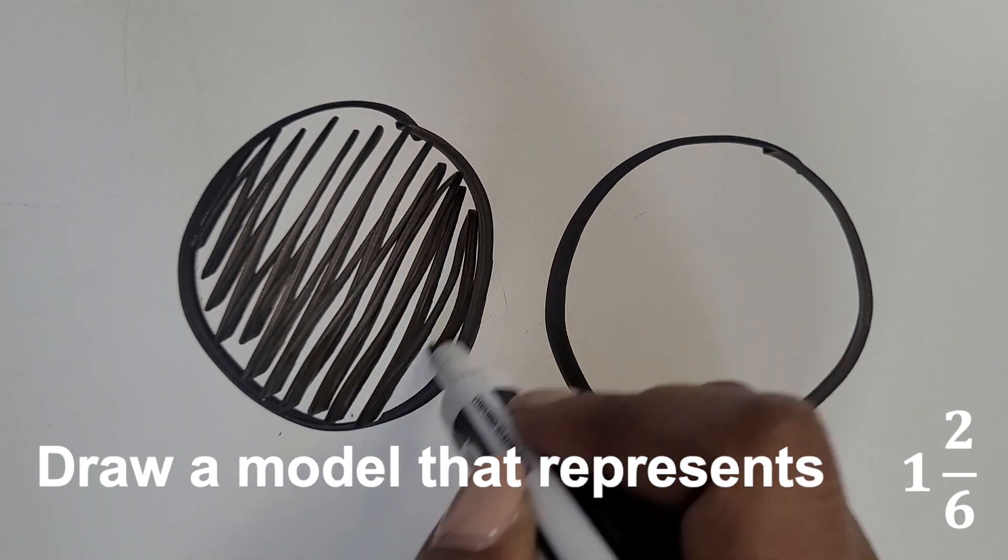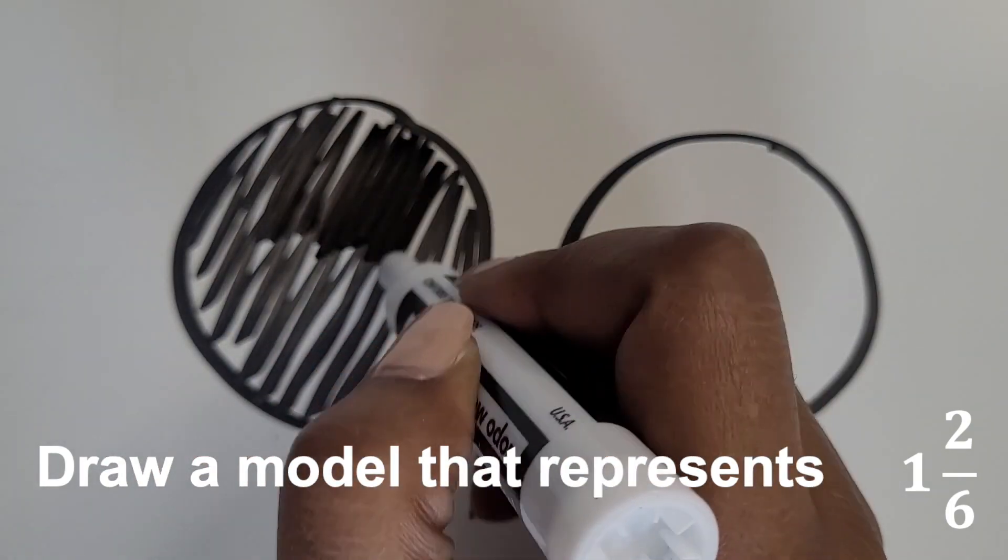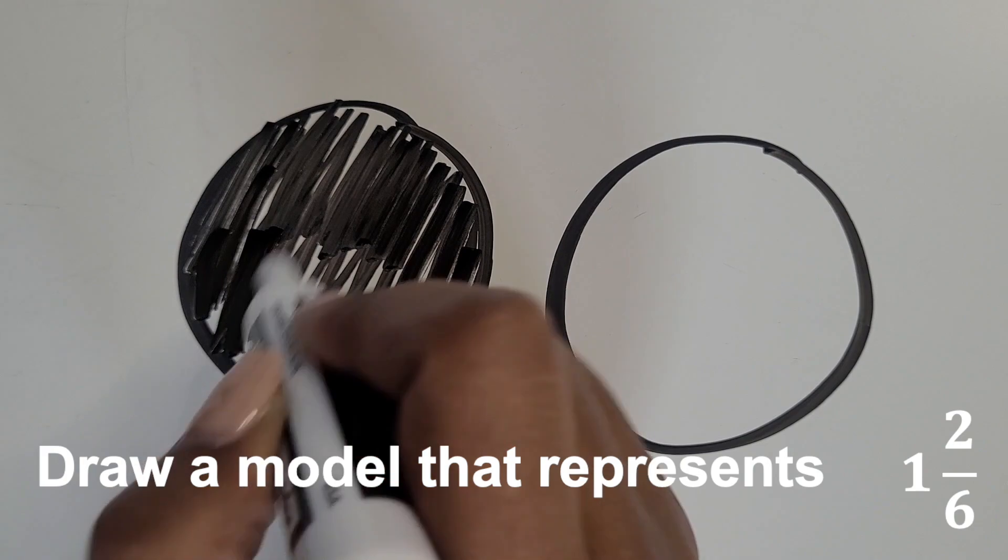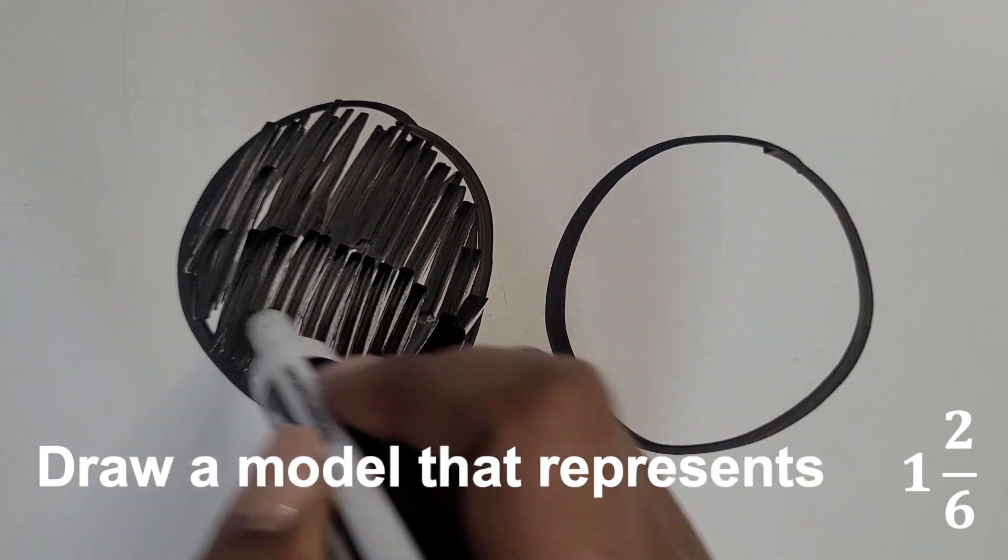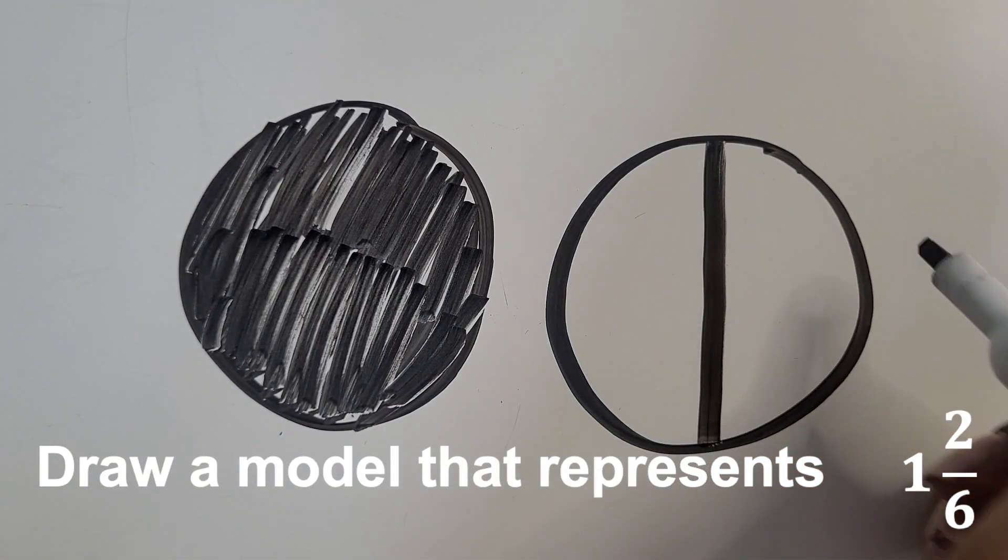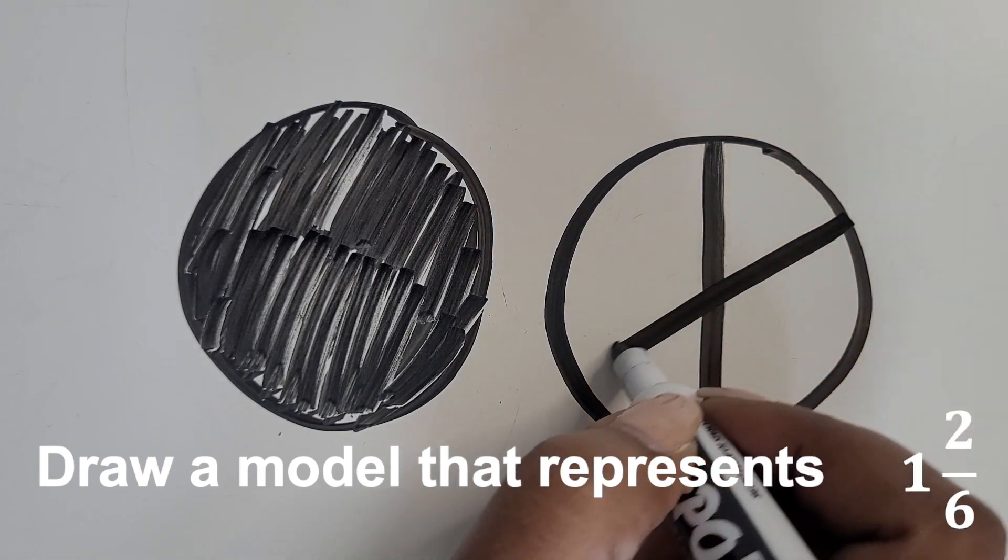So we draw one circle and shade it all in to represent the one whole, and then we need another whole drawn as a circle and we're going to partition that whole into six equal parts.